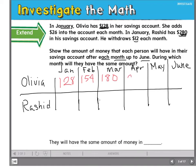In April, she would have $206. In May, $232. And in June, $258.